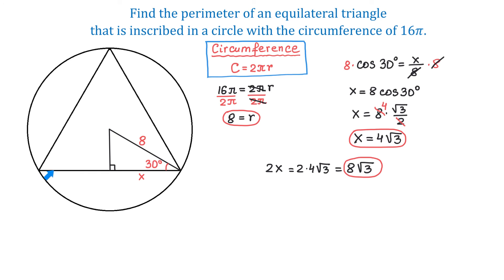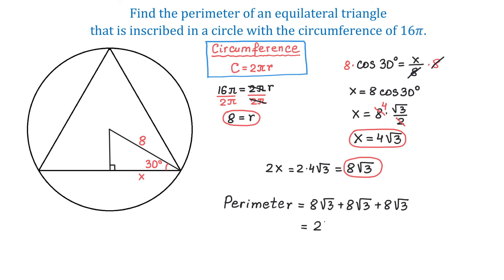We found one side of the equilateral triangle, and now we can find the perimeter. The perimeter is 8 square root of 3, plus 8 square root of 3, plus 8 square root of 3. The perimeter is equal to 24 square root of 3. So we found the perimeter, and it is 24 square root of 3 units.